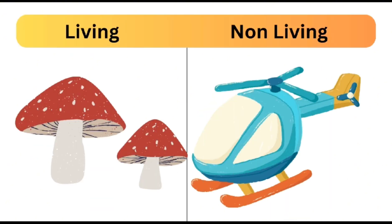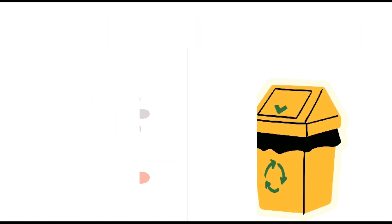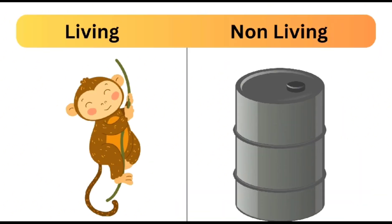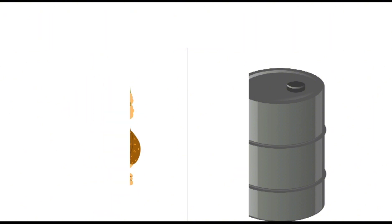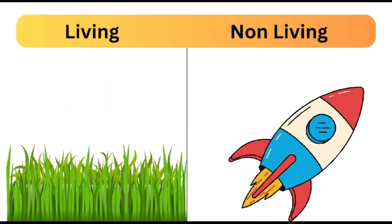Mushroom is a living thing and helicopter is a non-living thing. Flower is a living thing and trash can is a non-living thing. Monkey is a living thing and oil barrel is a non-living thing. Grass is a living thing and rocket is a non-living thing.